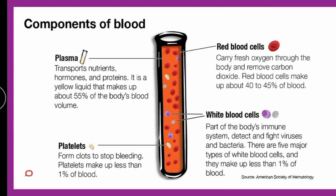The components of blood are plasma and cells like RBCs, WBCs, and platelets. RBCs carry oxygen and remove carbon dioxide. WBCs have a prime role in the immune system, identifying and fighting pathogens. Platelets function in blood clotting and stop bleeding. Plasma transports nutrients, hormones, and proteins.